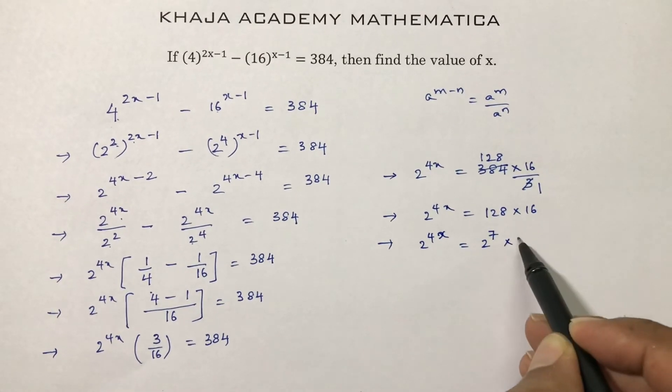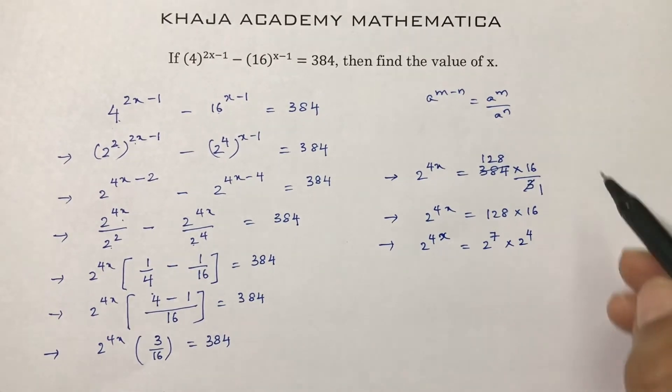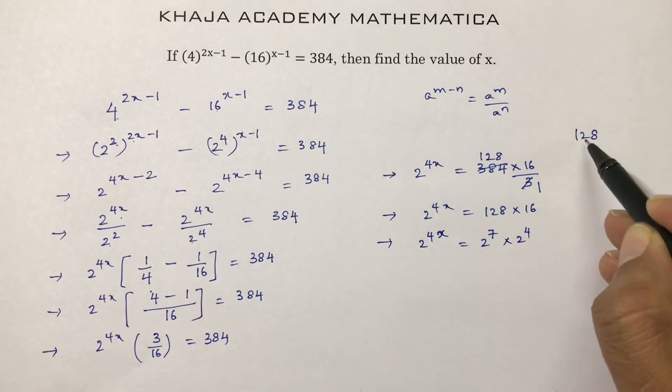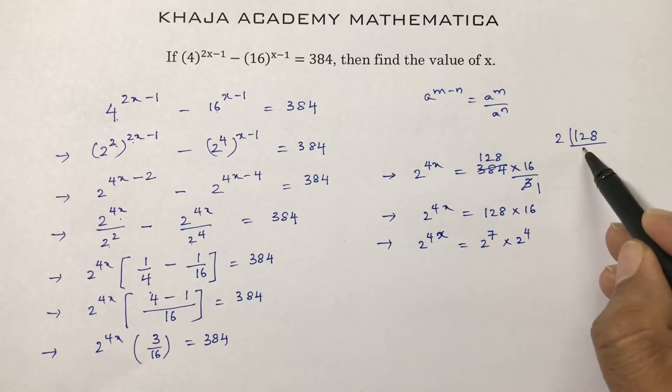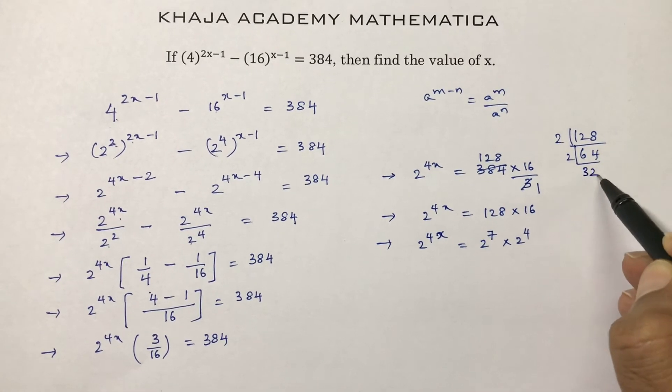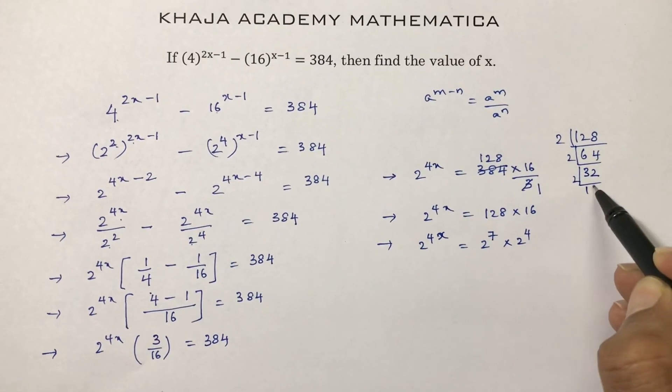See, 128 prime factors: 2 times 64, 2 times 32, 2 times 16, 2 times 8, 2 times 4, 2 times 2. 128 is 1, 2, 3, 4, 5, 6, 7 - 2 power 7. 16 is 1, 2, 3, 4 - 2 power 4.